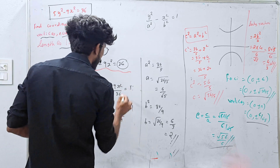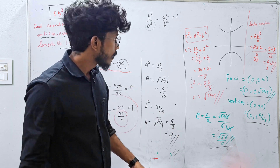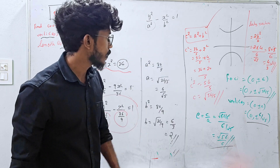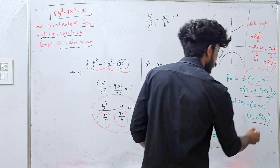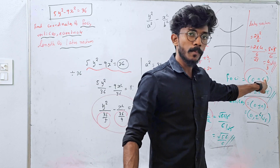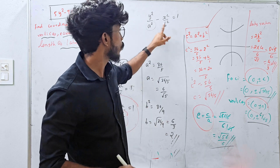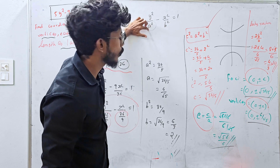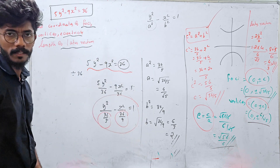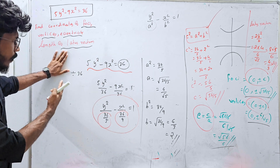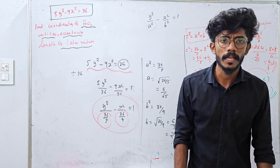To summarize: find a² and b², then a and b. Then c² = a² + b² gives c. Eccentricity is c/a. Foci are (0, ±c), vertices are (0, ±a) on the y-axis for this hyperbola. The formula structure differs between hyperbola (plus) and ellipse.